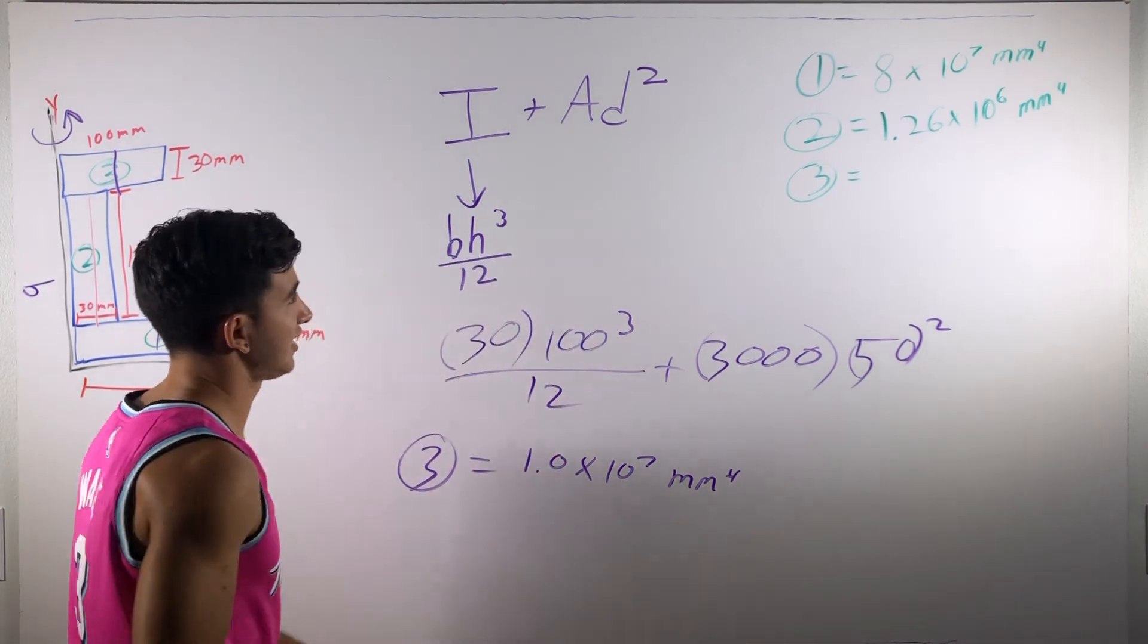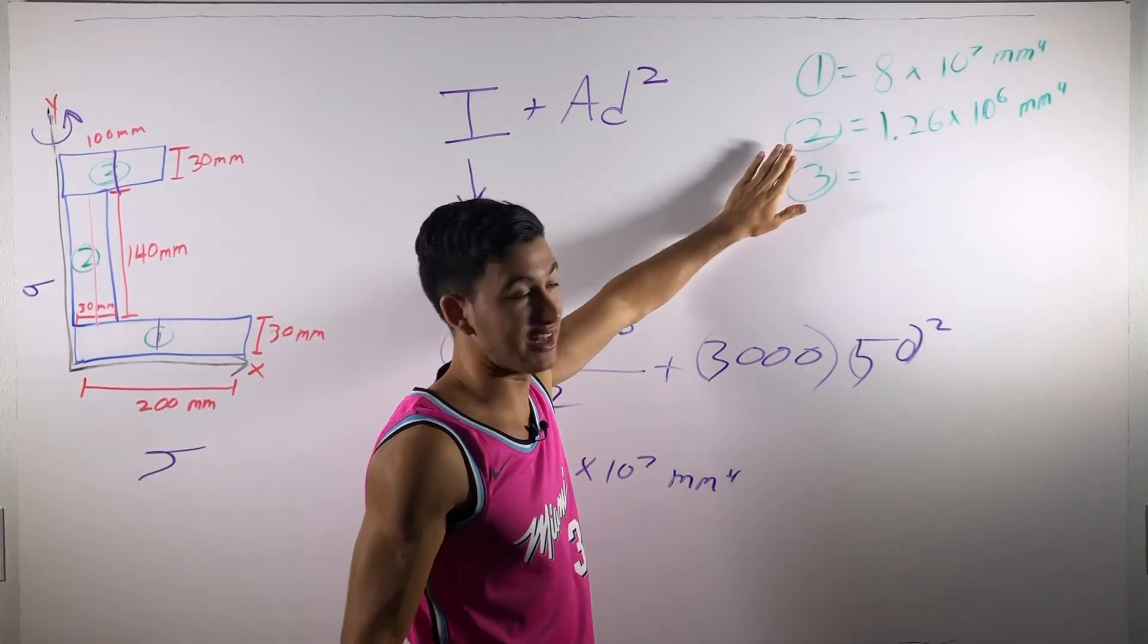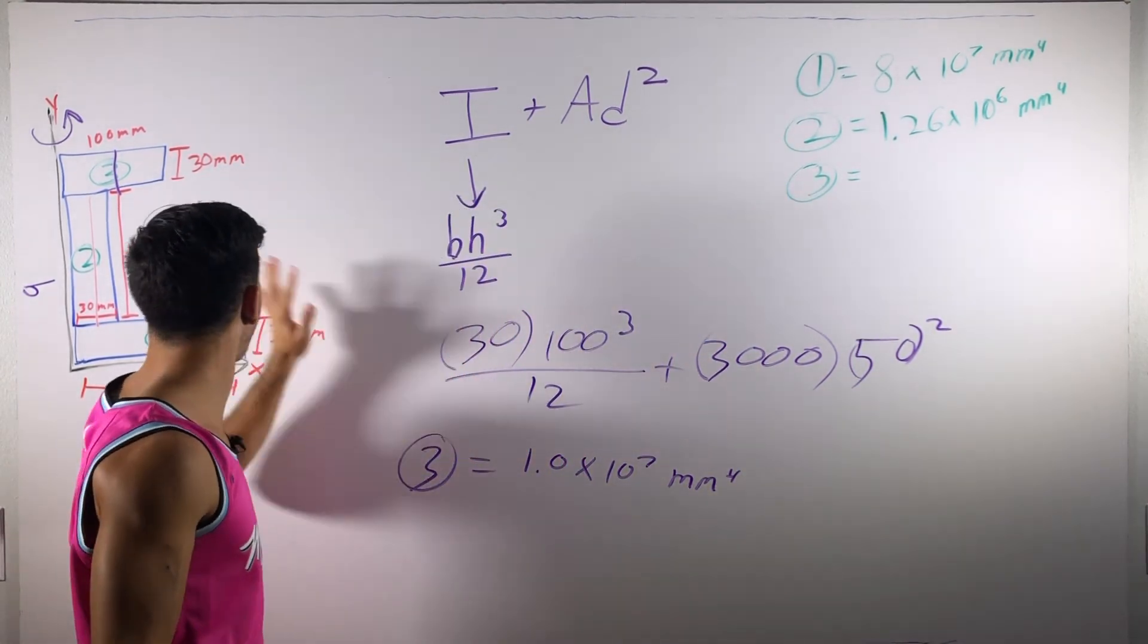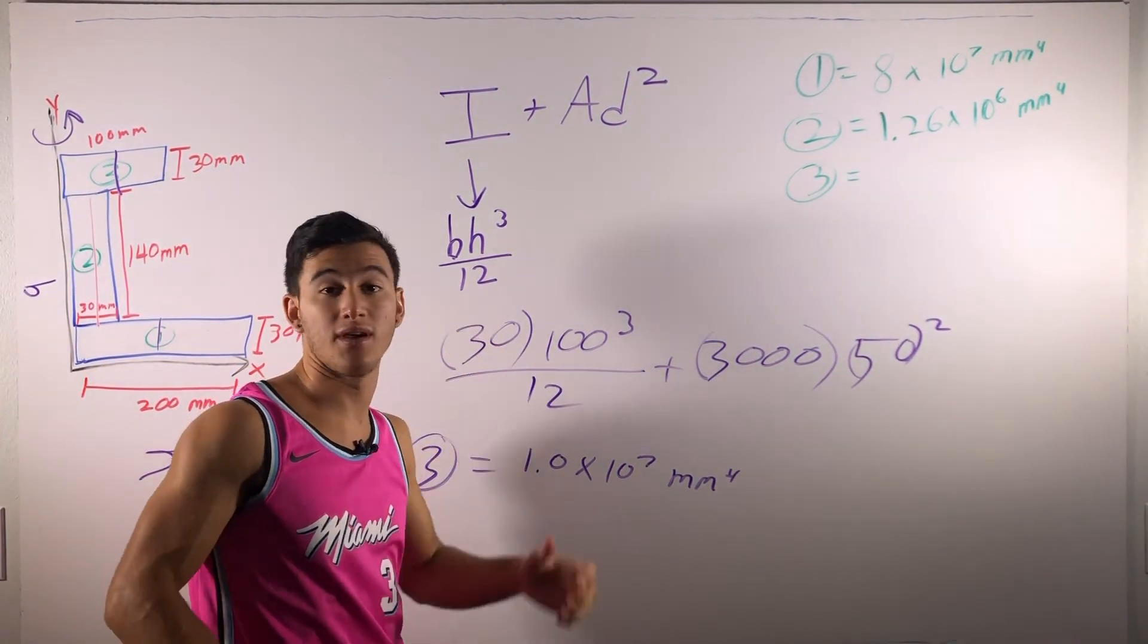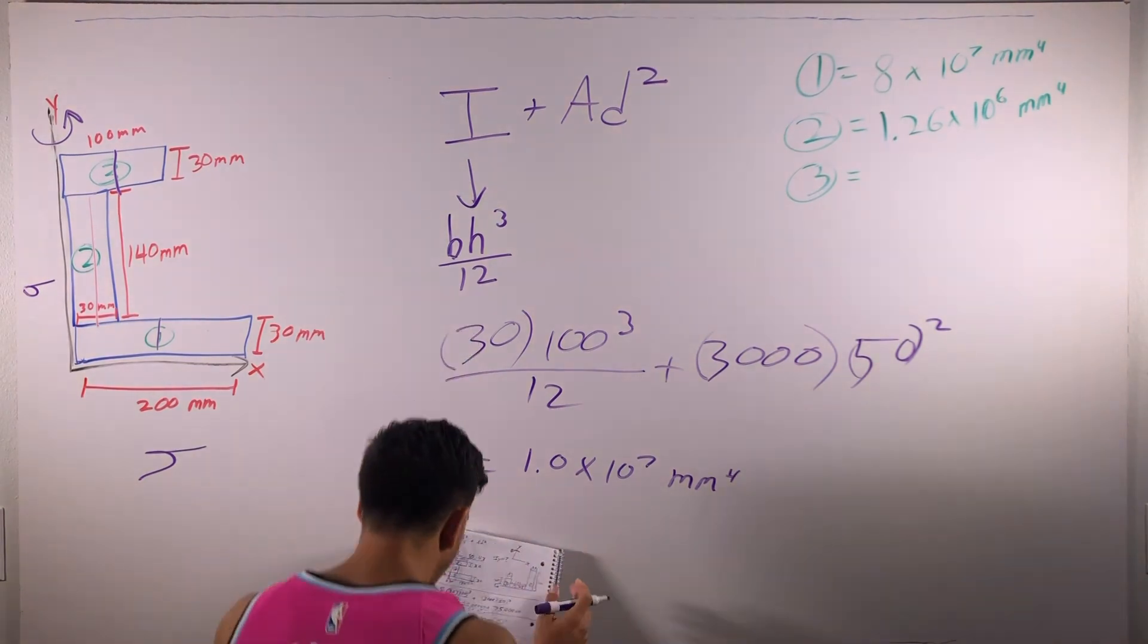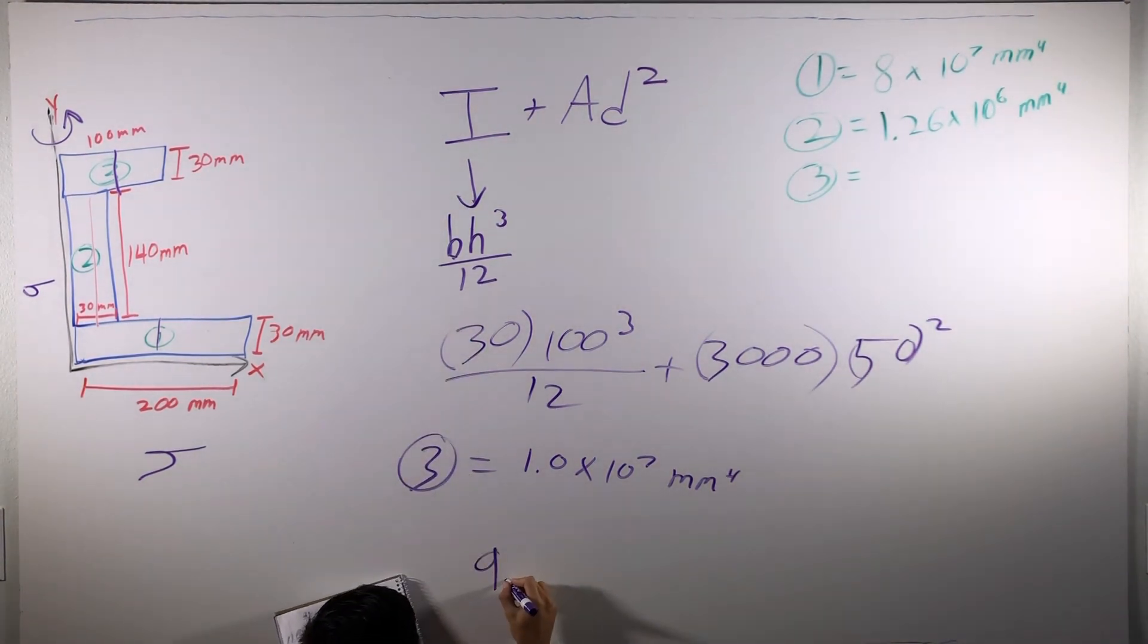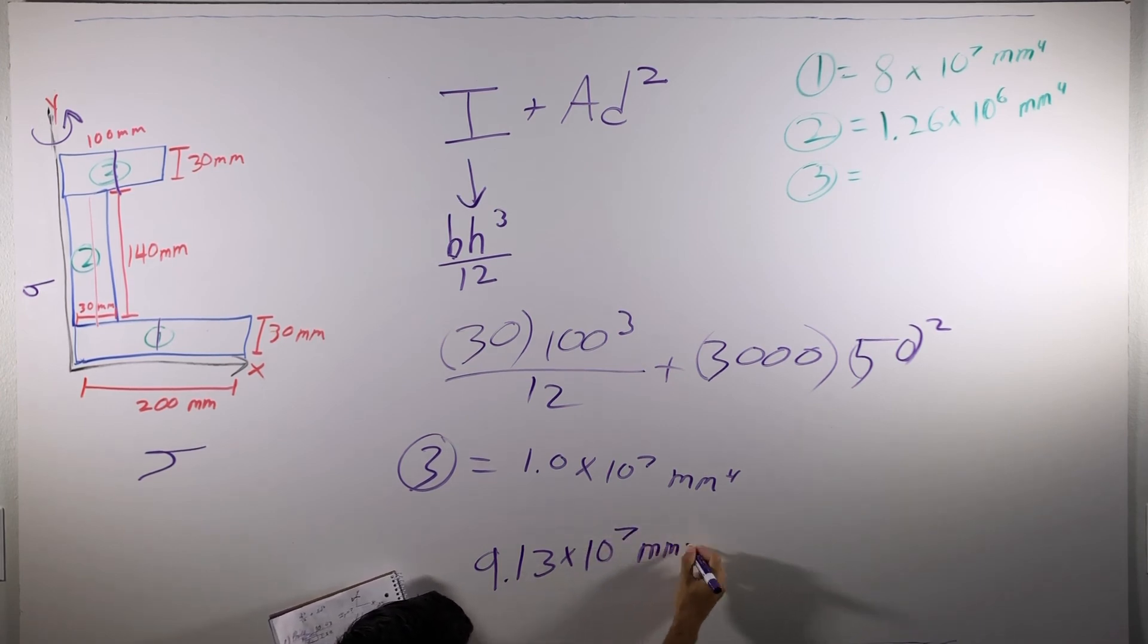Now, all you have to do to get your final answer is add one, add two, and then add three, add them all together to get your full moment of inertia for the cross-section of this beam about the y-axis. And that comes out to be 9.13 times 10 to the seventh millimeters to the fourth.